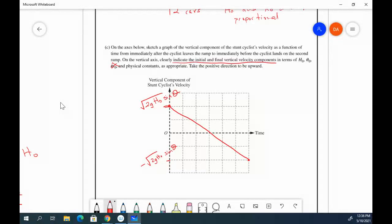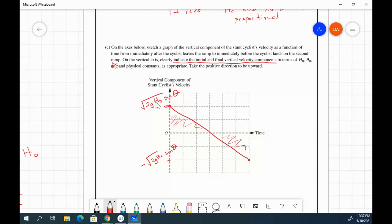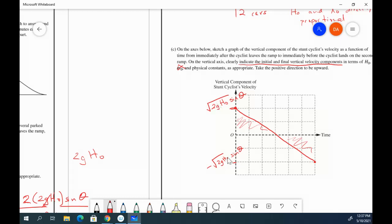Make sure that you are remembering to indicate those values when you can, or where you are intended to. So it says make sure you indicate the initial and final vertical velocity components. And then again, you want to make sure that you are clearly showing that this area and this area are equal because the displacement in the y direction is 0 overall. It starts and ends in the same place, which is why you have the positive and negative version of those values there.